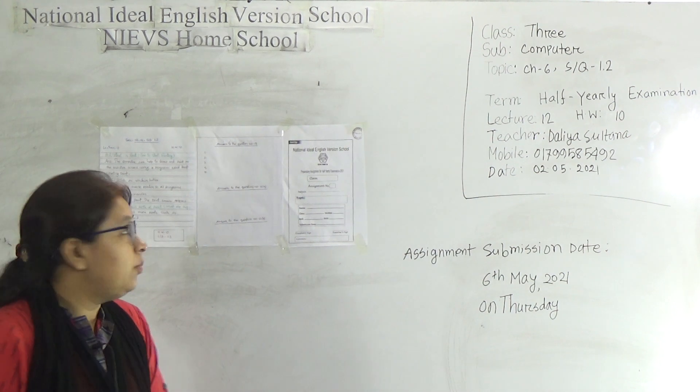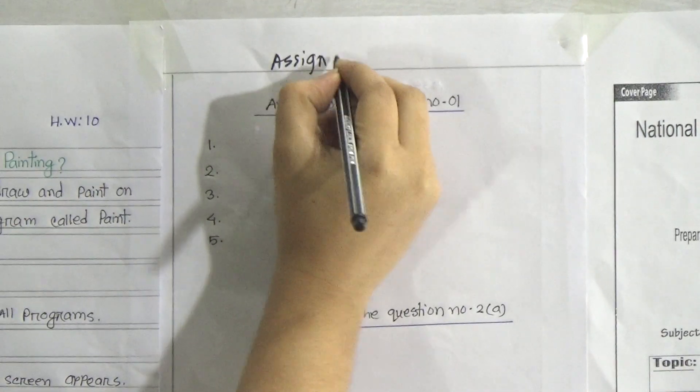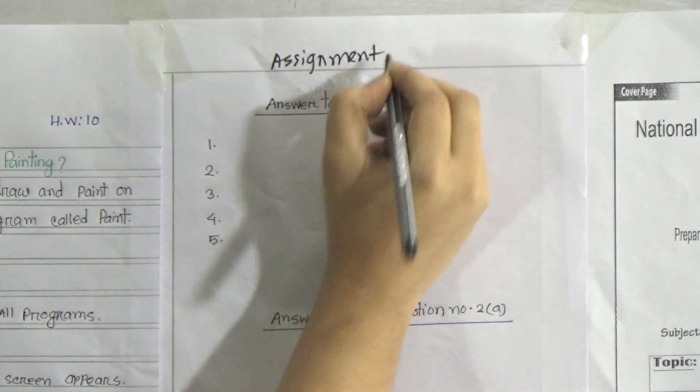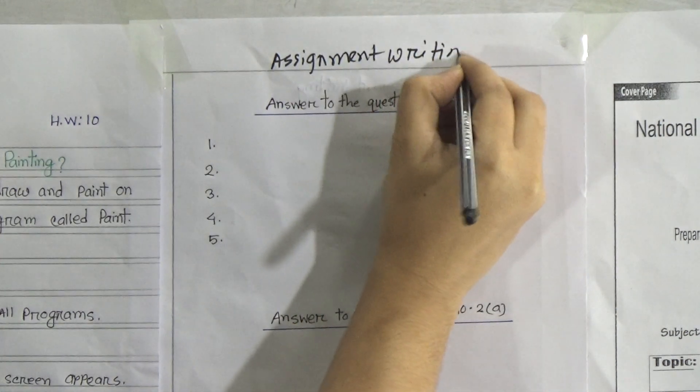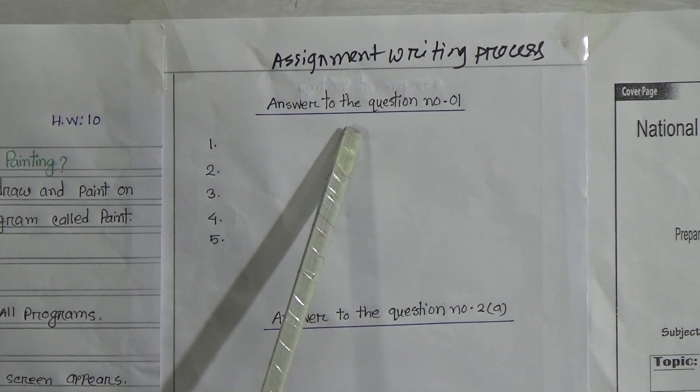Dear students, look at the board. Assignment writing process: answer to question number 1. Our first topic is MCQ. You have to write only the answer — do not need to write your question, write only your answer. After finishing question number 1, then move on to question number 2.